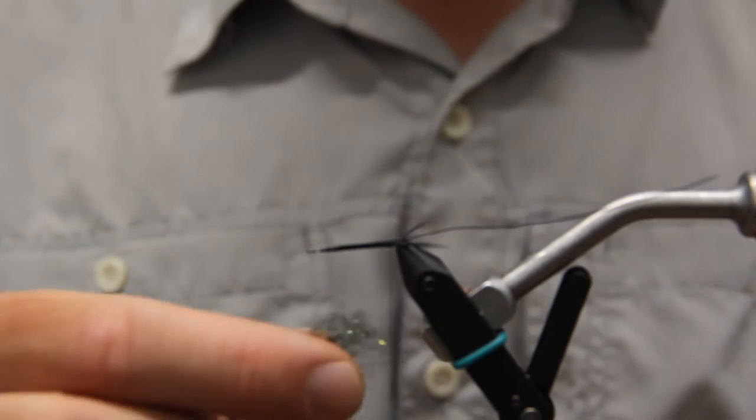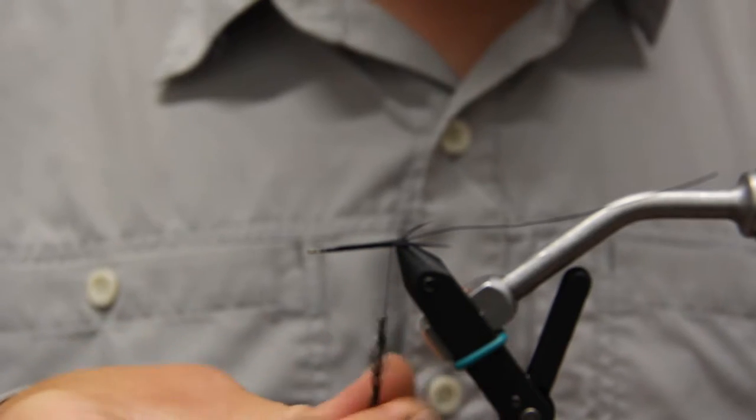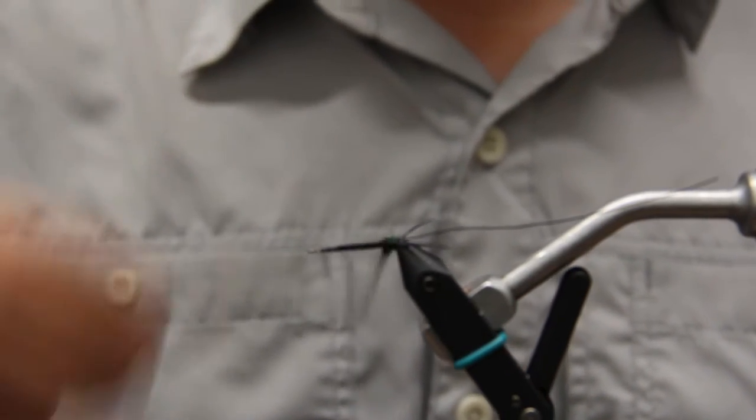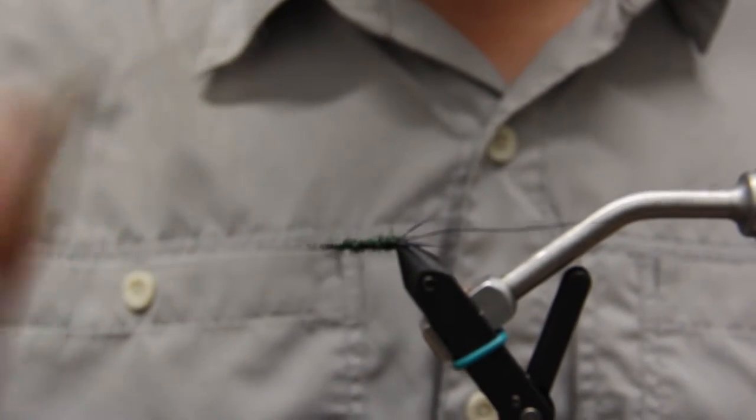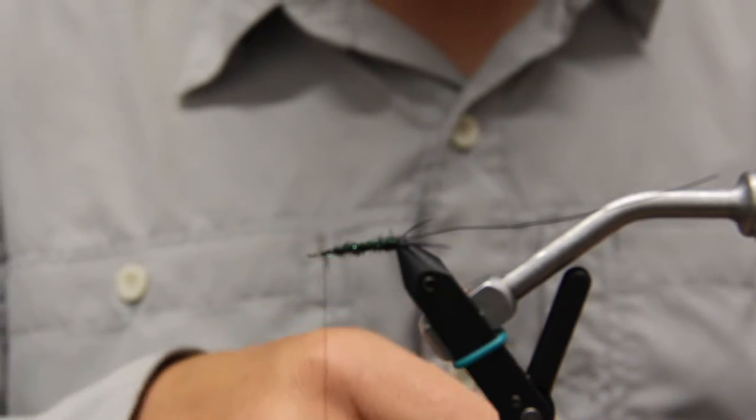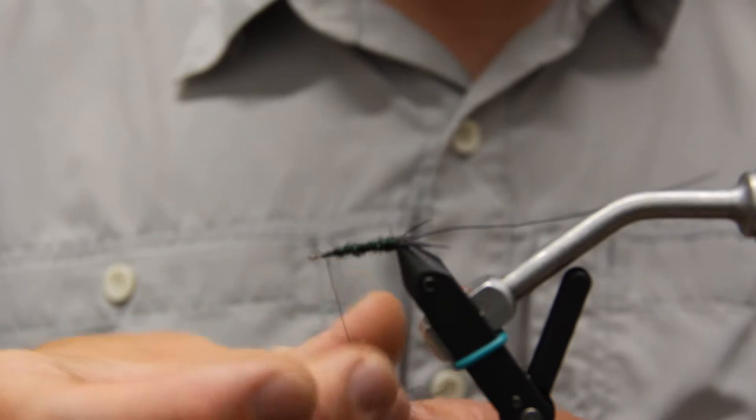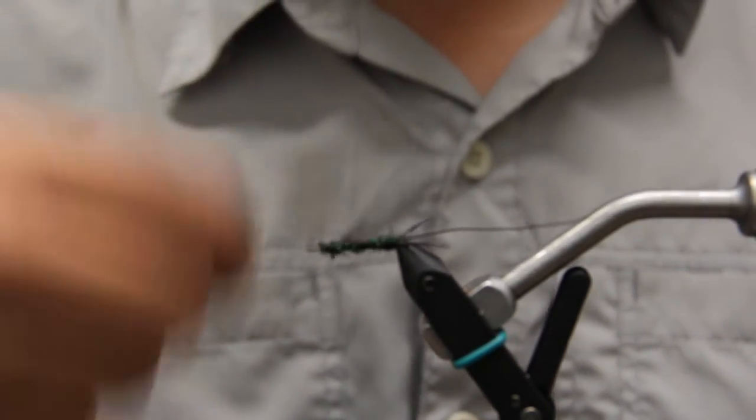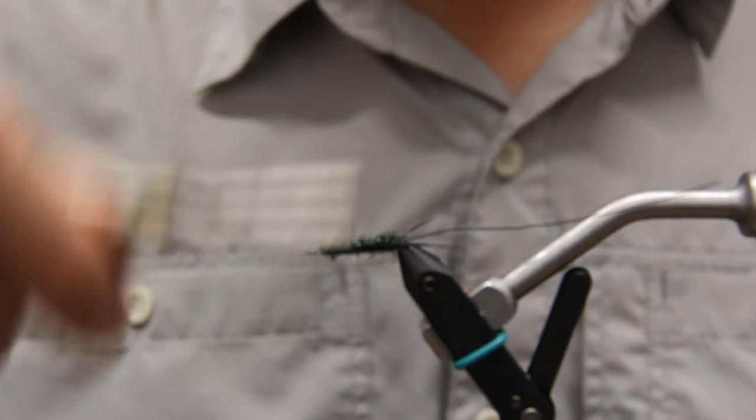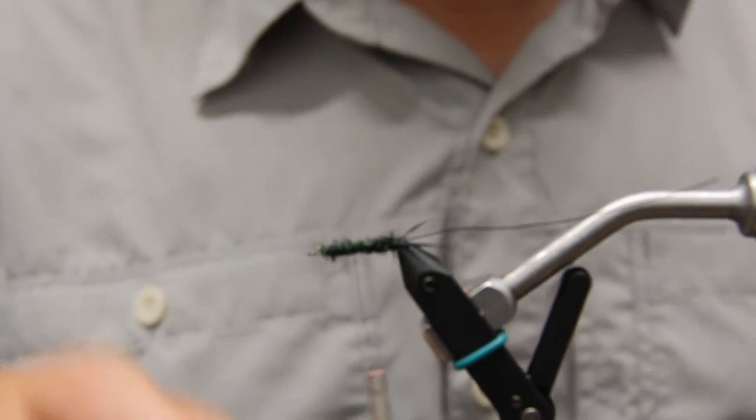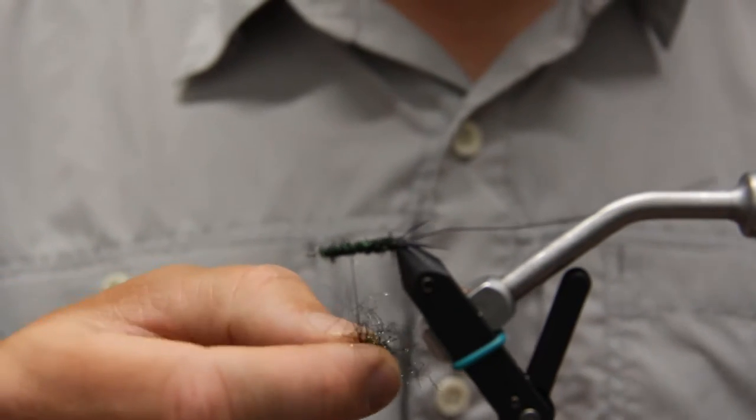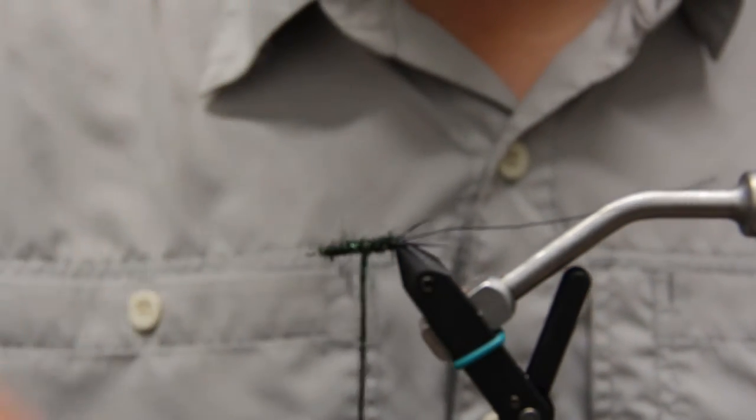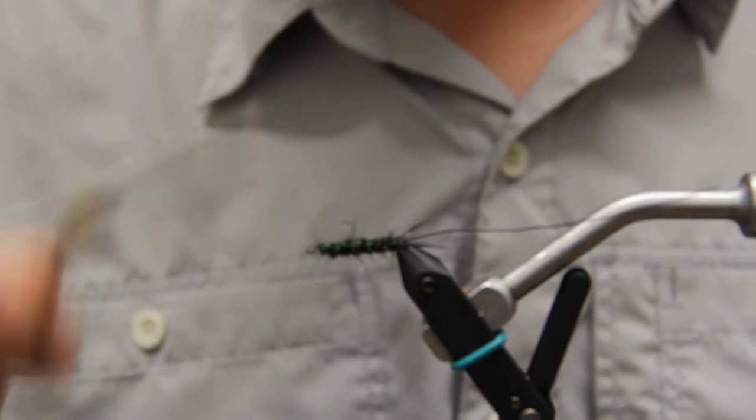Now we're ready to dub our body, I'm going to take our black peacock ice dub. I'm just going to dub up, I'm going to go back and forth with this dubbing a couple of times, use a liberal amount, build up a body, and then I'll use a black thread to kind of smash everything down. You can build up a taper to this body or you can just have it level. It's totally your call, I like leaving it pretty buggy.